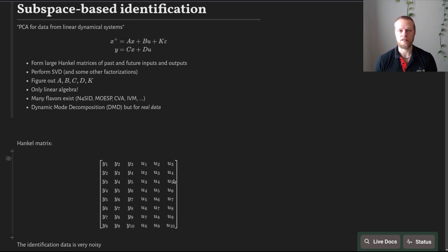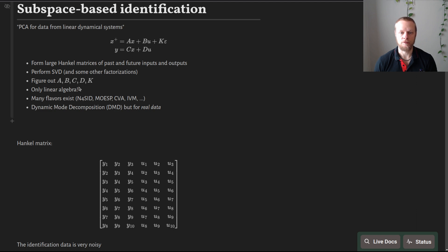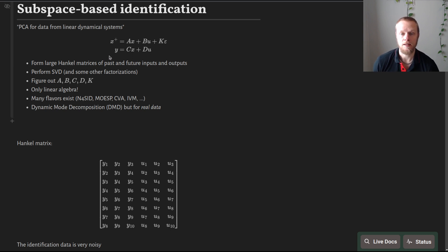In practice, because there is some noise, all singular values will be non-zero, but a few will be significantly larger than zero. A particularly attractive aspect of subspace-based identification is that the whole algorithm is only linear algebra — it performs SVD and typically a few QR factorizations. There is no iteration, so you don't need to solve any optimization problem or provide an initial guess. That makes it quite fast and robust.